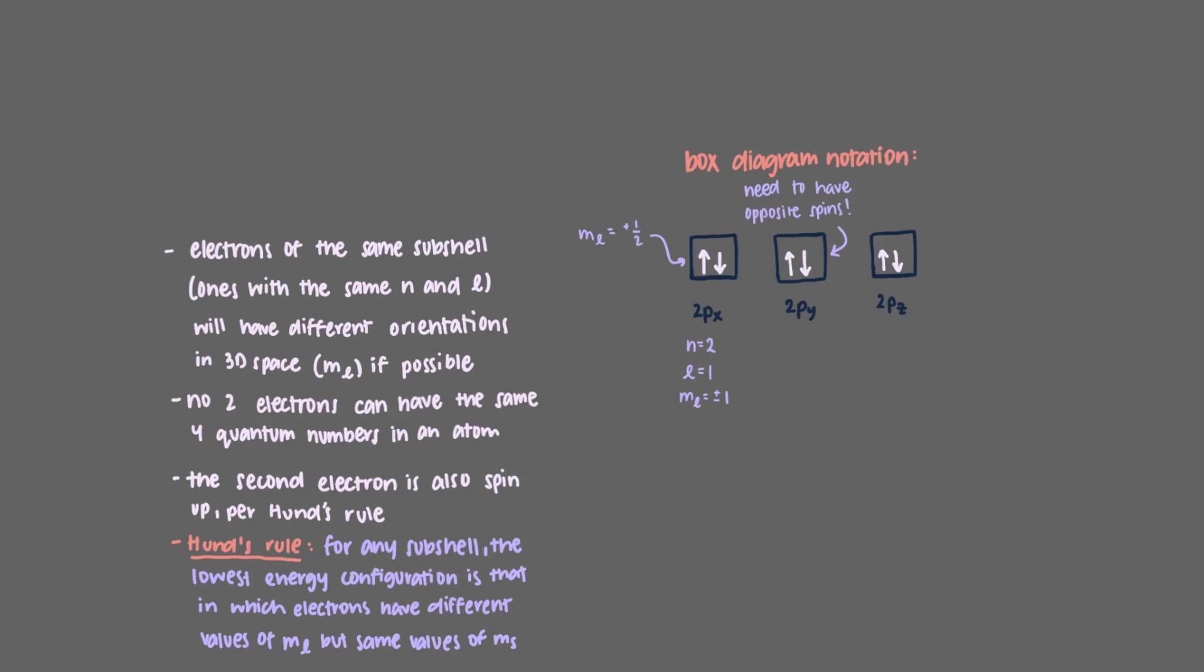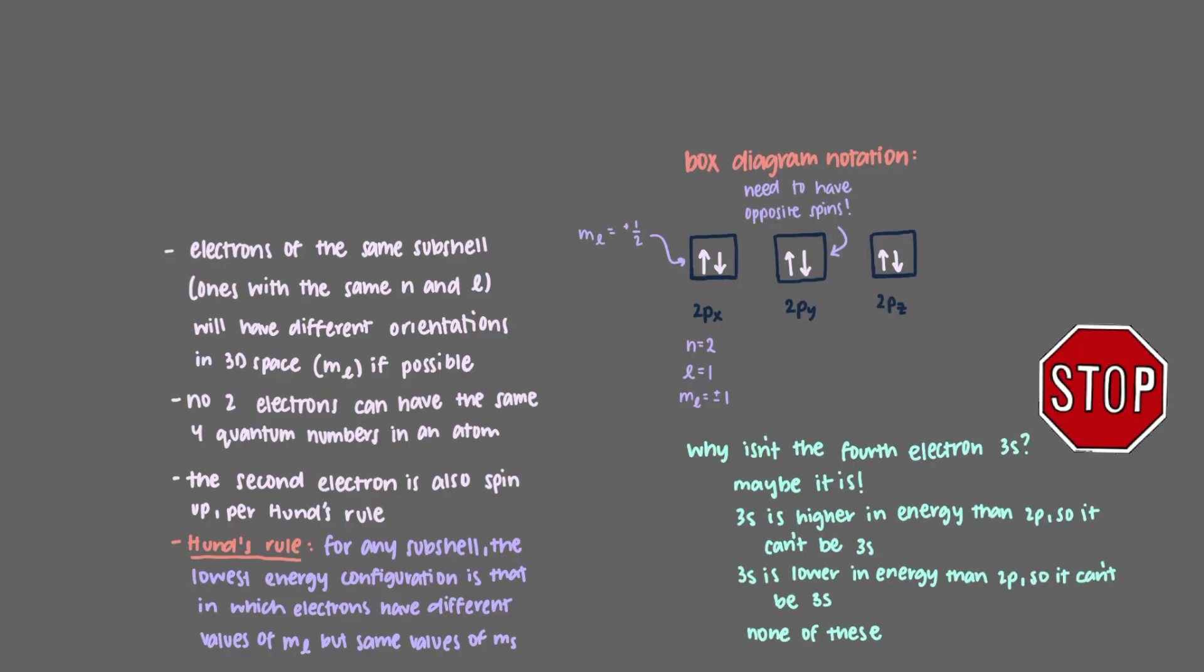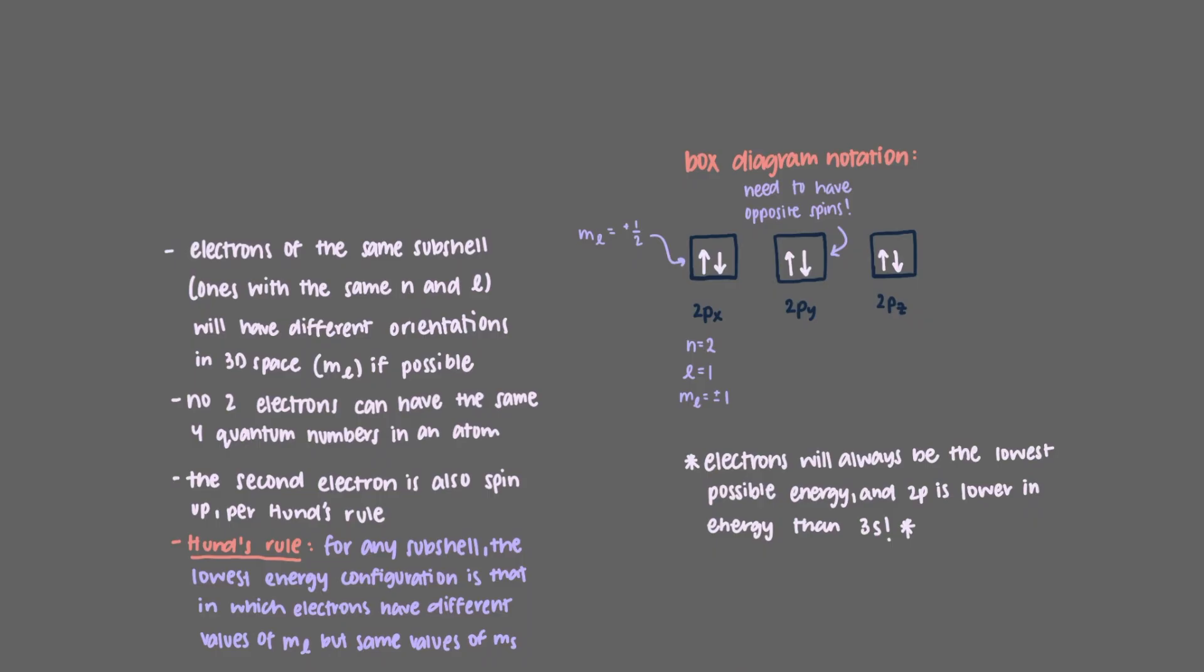You may wonder, why pair up electrons at all? Why isn't the fourth electron 3s? That's right, remember, electrons will always be the lowest possible energy, and 2p is lower in energy than 3s. After all, you wouldn't choose to sit on the bus's roof instead of sitting in a row with someone else, would you?